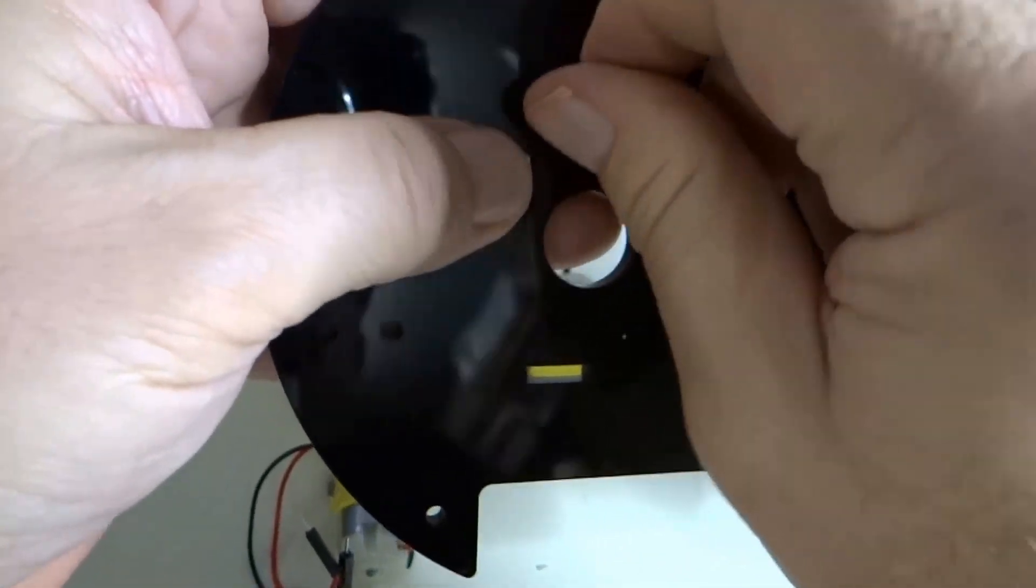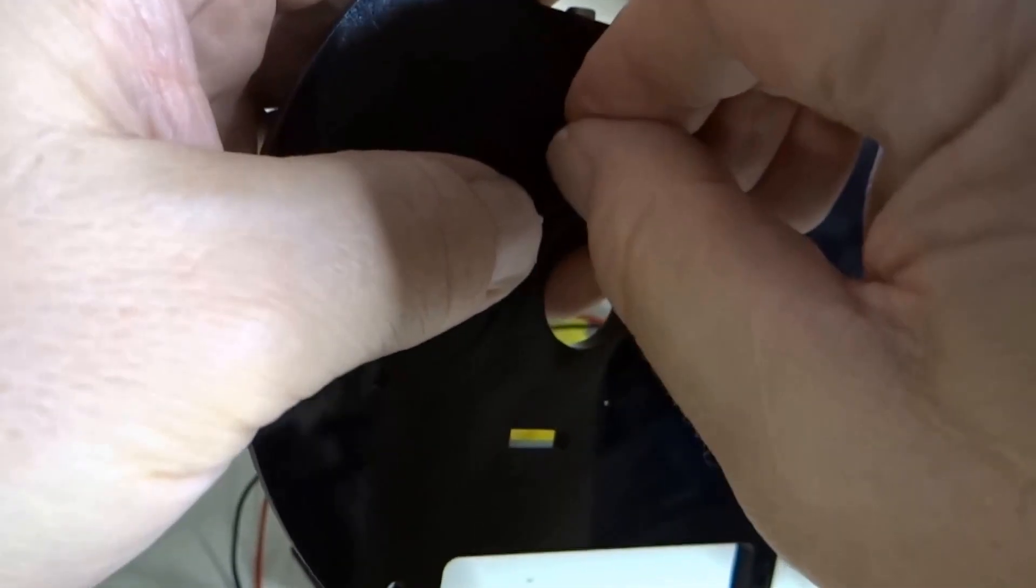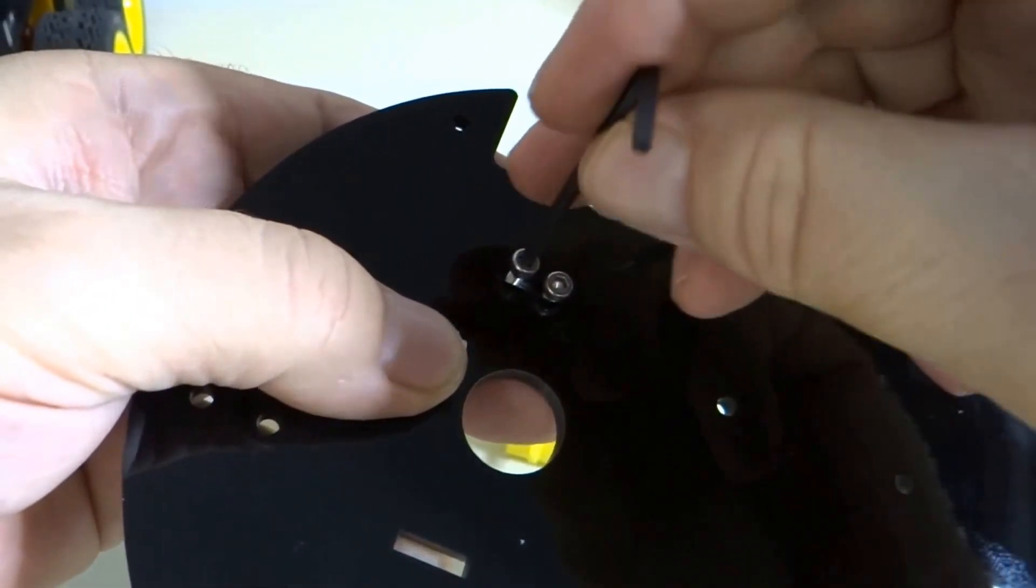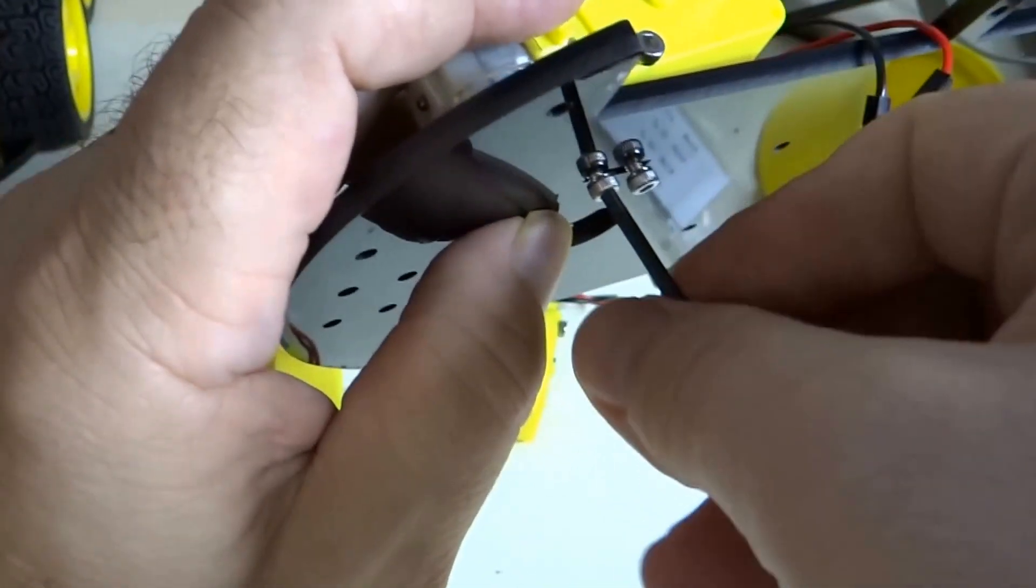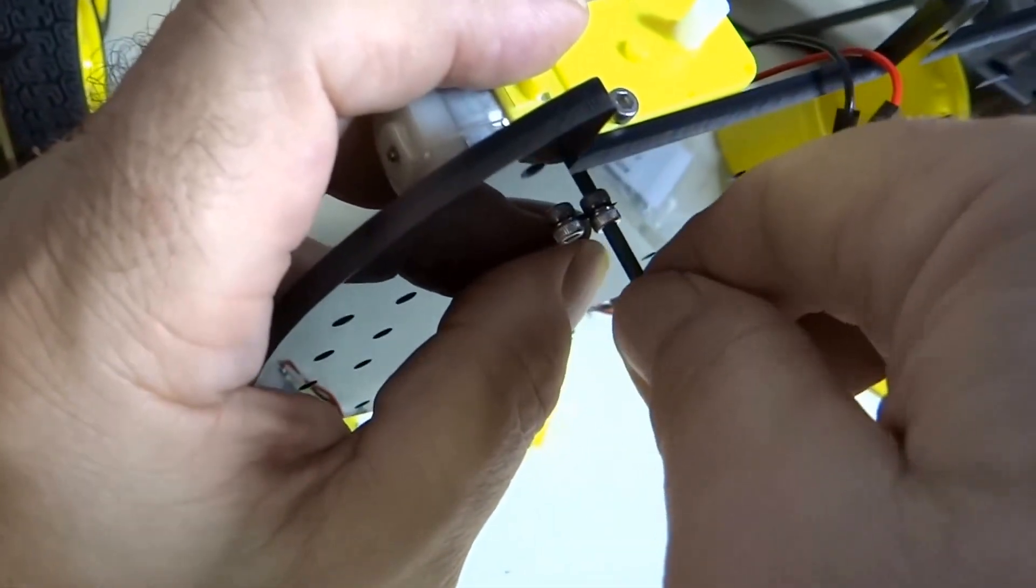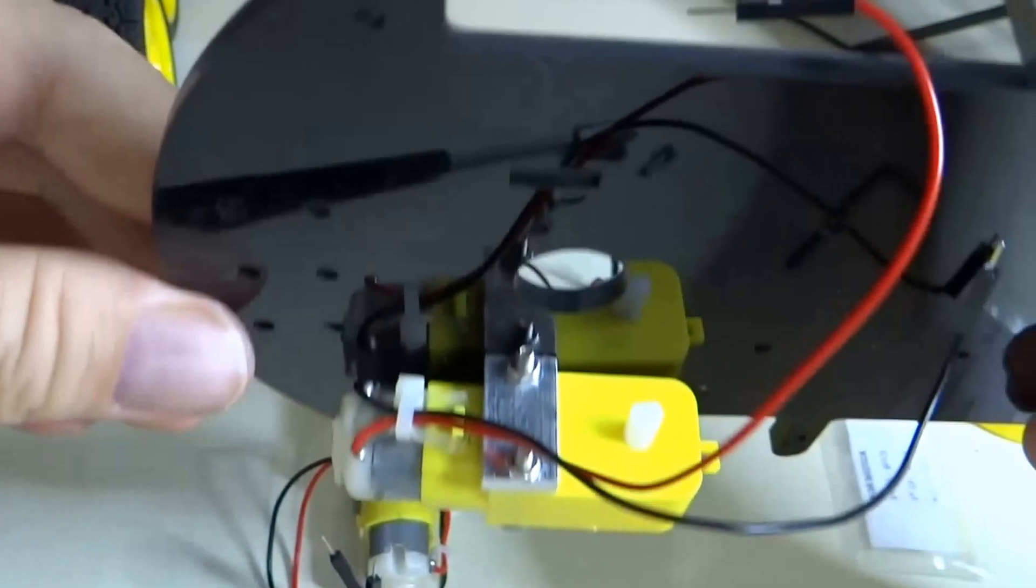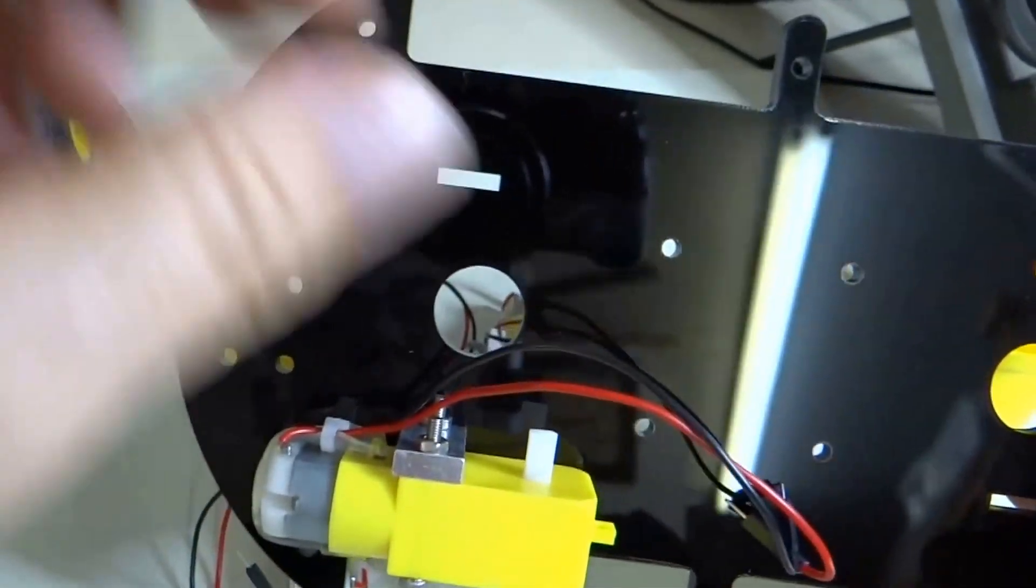We're just going to put them through here, get them started. Now, I'm just going to put them down loose right now. I'm not going to tighten them super hard. I want to make sure we don't have wires strapped underneath the case or the bracket. The wires are nice and loose here.